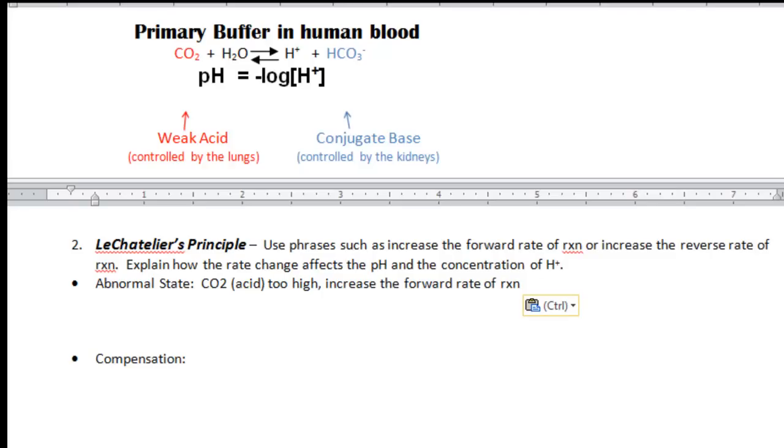So we'll type that in. If the forward rate of reaction increases, there will be an increase in the hydrogen ion concentration. So if there's an increase in the hydrogen ion concentration, the pH will decrease.